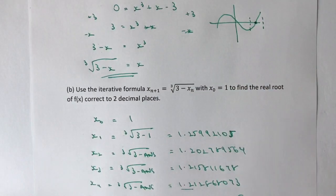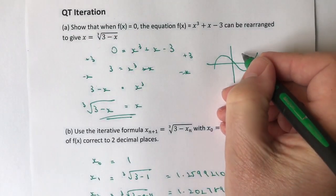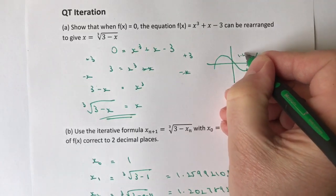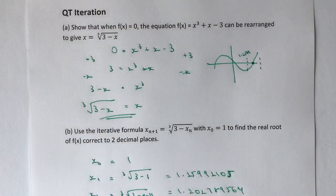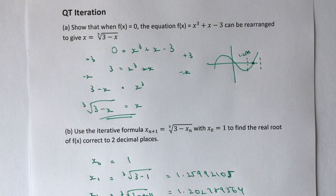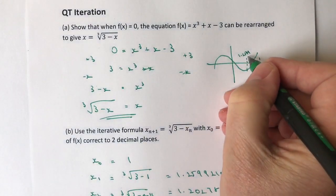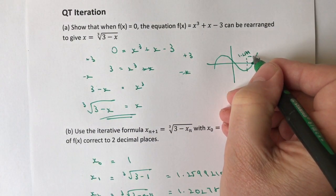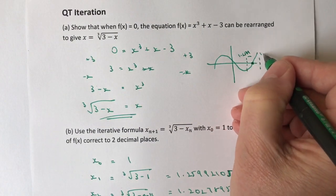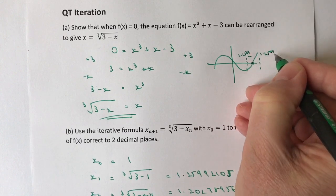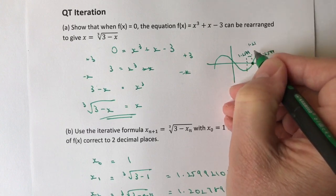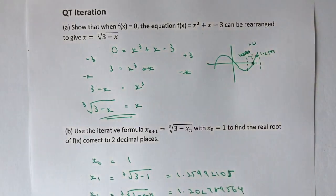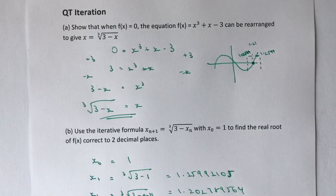As we feed the formula back in, or as we feed the answer back in, we're getting closer and closer to the value of x. Eventually we get to the point—that would have been 1.2599—we're getting very close to the point where we're working this out as 1.21. Hopefully that gives you some idea that iteration is all about getting closer and closer to the final answer.